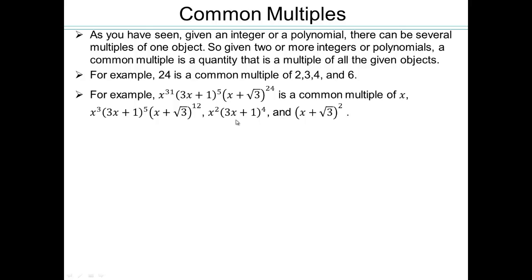Let's look here. x squared — clearly, the x power is way more. And the 3x plus 1 power is more, so yes. And x plus square root 3 to the power 24, and here we only have 2. So this polynomial is a multiple of x, a multiple of x cubed times 3x plus 1 to the fifth power times x plus square root 3 to the 12th power. It's a common multiple.